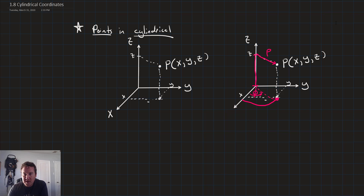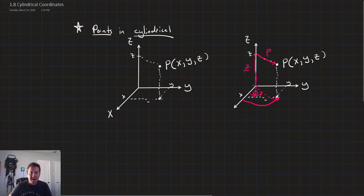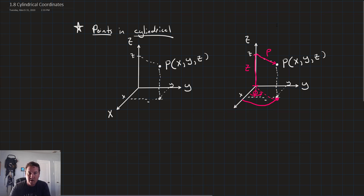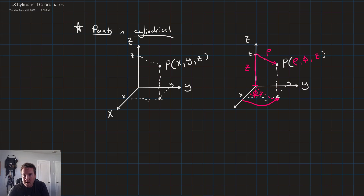In cylindrical coordinates we keep the z-axis the same. The gist is: we're some distance rho away from the z-axis, some height z above the x-y plane, and some angle theta away from the x-axis. So we can rewrite our point P(X, Y, Z) as P(rho, theta, z).